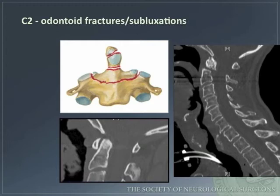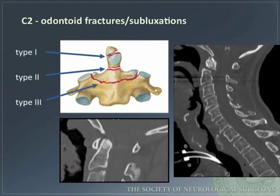C2 odontoid fractures and subluxations may be divided into three types: Type 1 is through the tip of the dens, Type 2 is through the base of the dens, and Type 3 is through the body of C2.